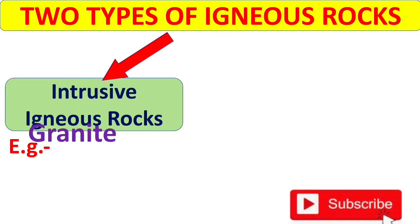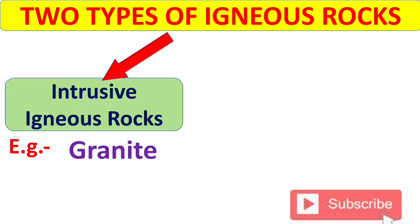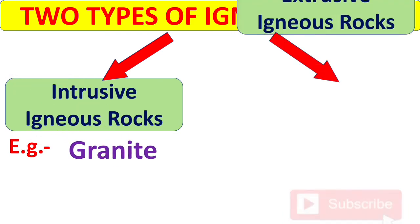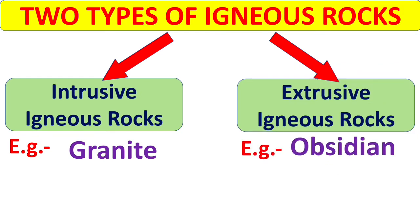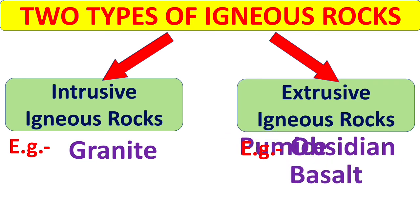There are two types of igneous rock. The first is intrusive igneous rocks — example: granite. The other is extrusive igneous rock — examples are obsidian, basalt, and pumice.